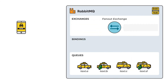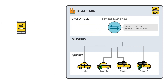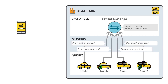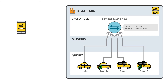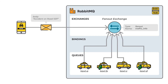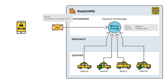Fanout exchange copies and routes a received message to all queues that are bound to it, regardless of routing keys — a provided routing key is simply ignored. In our example, the fanout exchange is used when the taxi coordinators inform all taxi drivers about a blocked road.